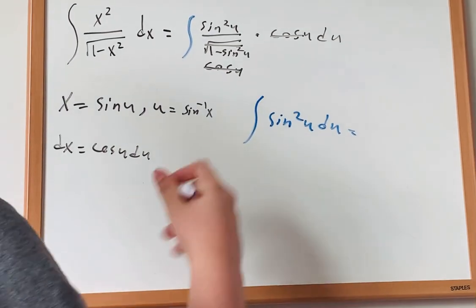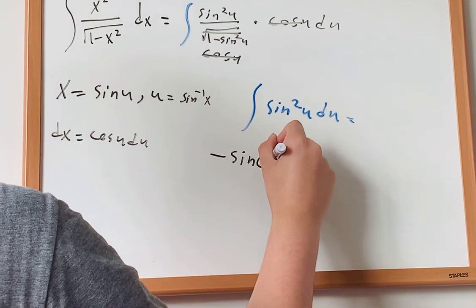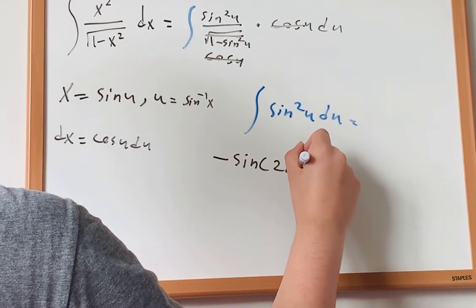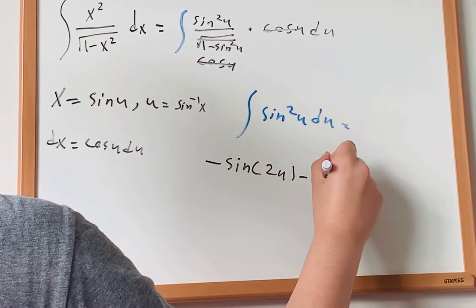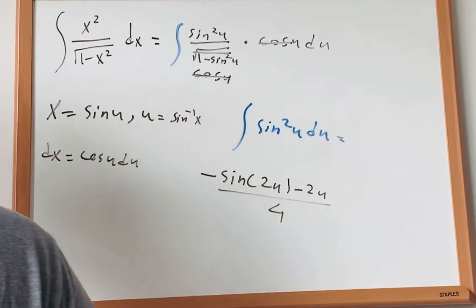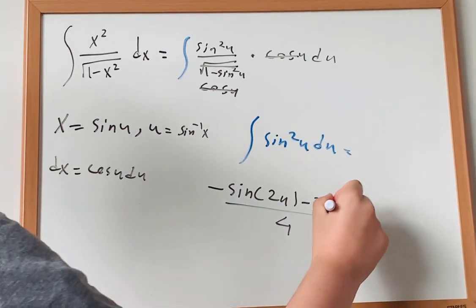we get negative sine of 2u, and then minus 2u, divided by 4, and then u plus c.